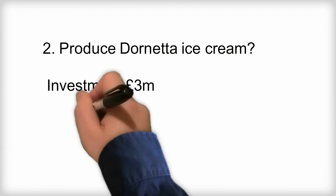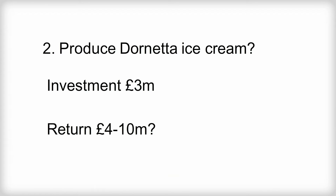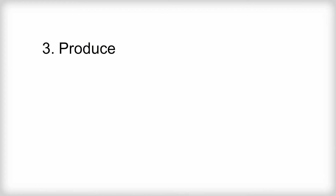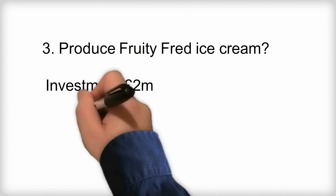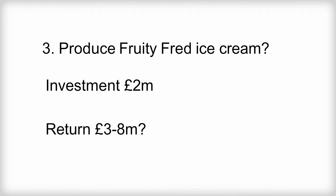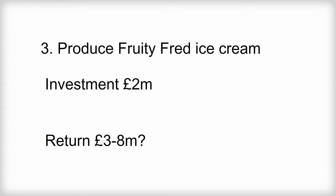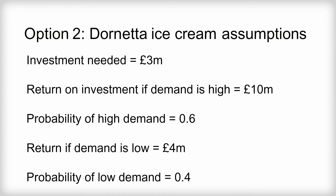Option two is to set up operations to make a new product called Dornetta — a premium-priced cone ice cream with elaborate ripples, sprinkles, and nuts. Option three is to set up operations to produce a different new product with the brand name Fruity Fred, a much simpler ice cream tub available in a range of fruit flavours. Both the investment needed and the returns for the Fruity Fred option are less.